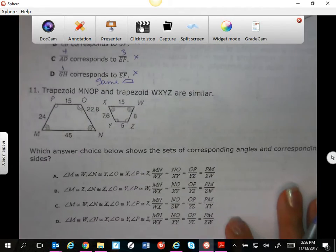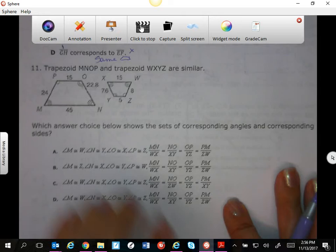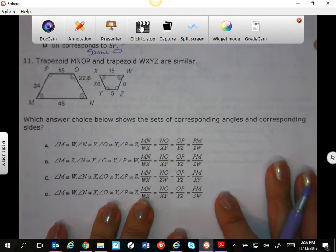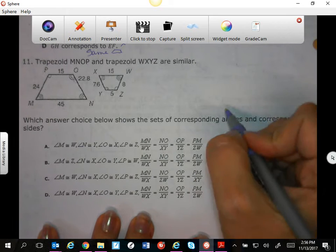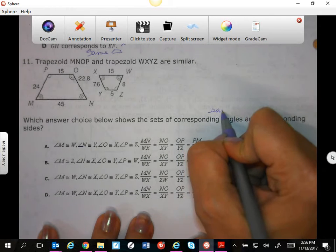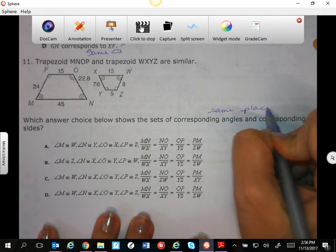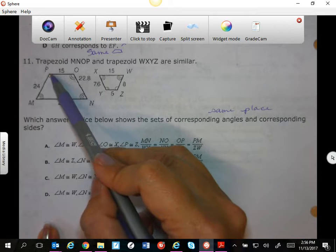Trapezoid MNOP and trapezoid WXYZ are similar. Which answer choice shows the set of corresponding angles and corresponding sides? Remember, corresponding means that they're in the same place, so notice our notation.